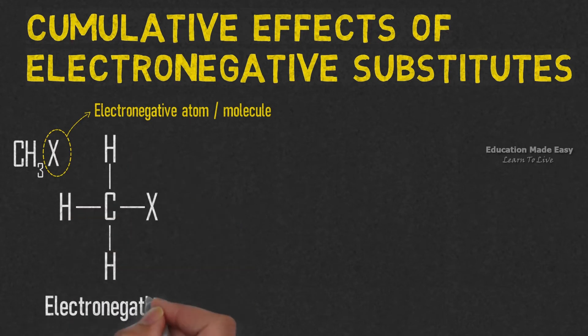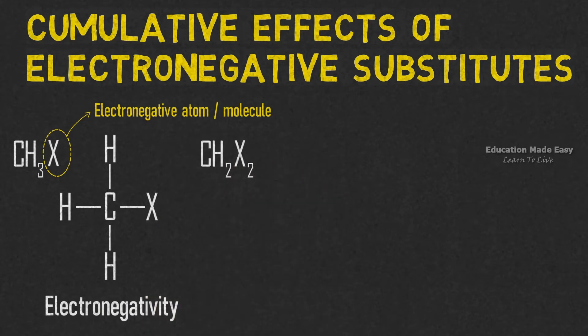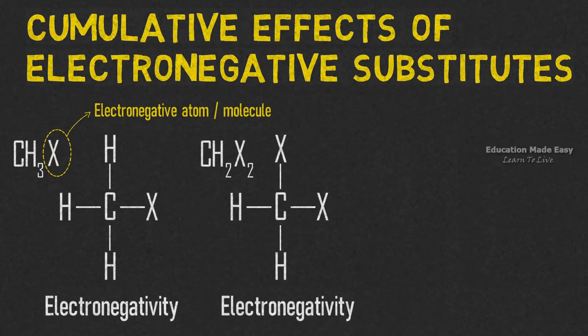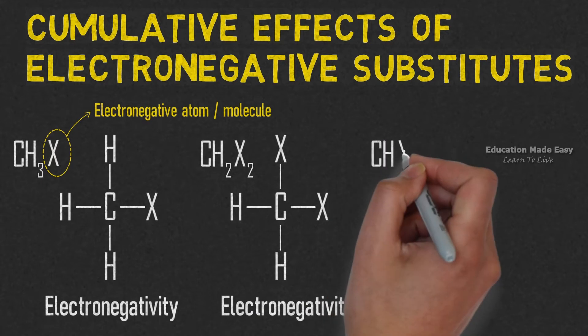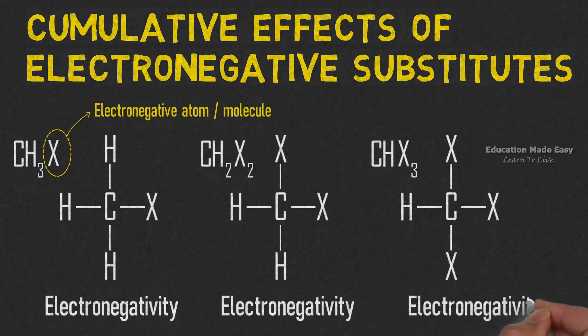Consider the molecule CH2X2. The structure of CH2X2 is like this. Here the electronegativity increased due to 2X. Now consider the molecule CHX3. The structure of CHX3 is like this. Here the electronegativity got increased again due to 3X.